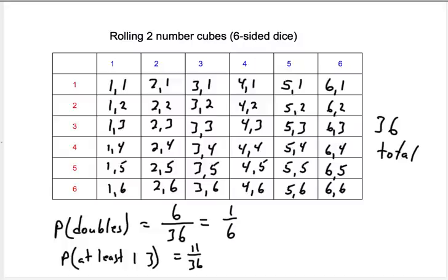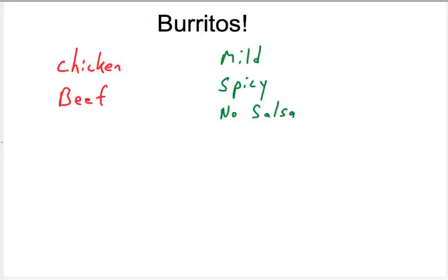Now let's try this next problem here. Burritos. So when you go to a burrito place, there's lots of choices. I'm simplifying it a little bit because this is our first example. But let's say our choices were chicken or beef in our burrito, and mild salsa, spicy salsa, or no salsa at all. We can make a pretty easy tree diagram showing all the possible burritos you can make given these choices.